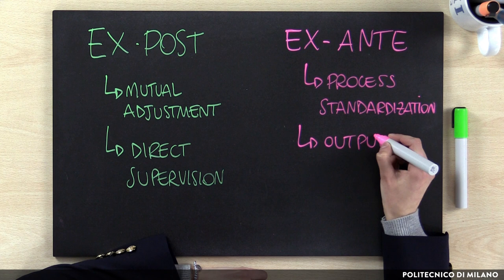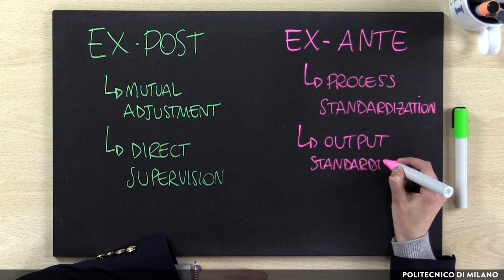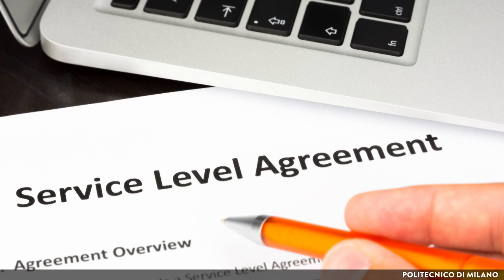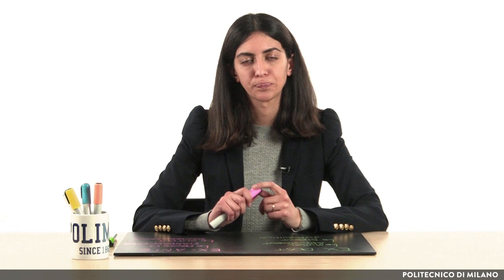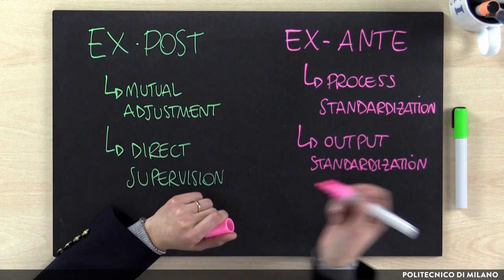The second ex ante mechanism is output standardization. In this case, managers are not formalizing what activities the employees need to perform, but just which results they have to obtain. An example is the definition of output features to provide to a customer in terms of quality, punctuality, and price through a service level agreement. Another example is the monthly target in terms of volume and marginality provided to the sales force to evaluate their performance. This mechanism is suitable when it is possible to clearly distinguish who plans activities and who executes them, and is not very suitable in turbulent environments, because it might not be easy to identify realistic targets to achieve.